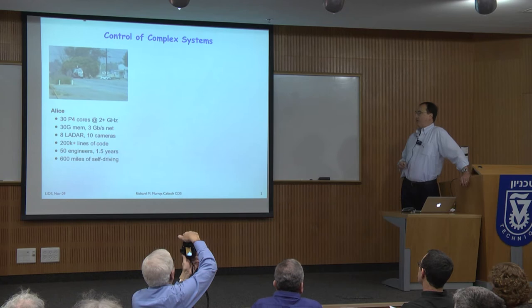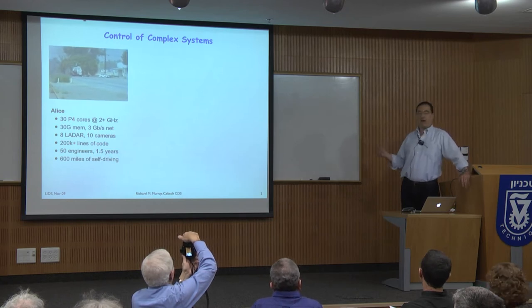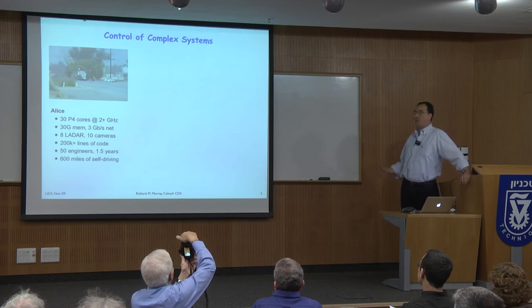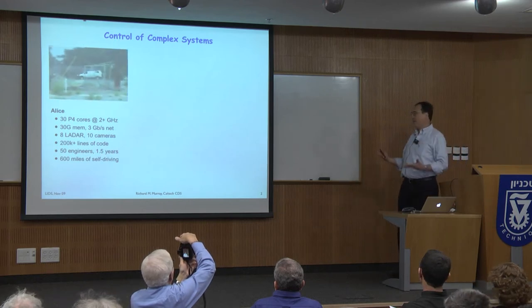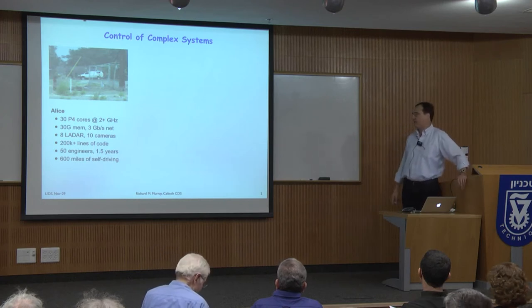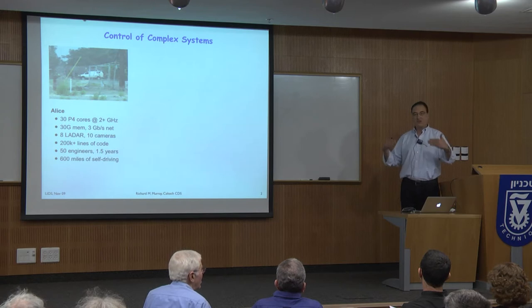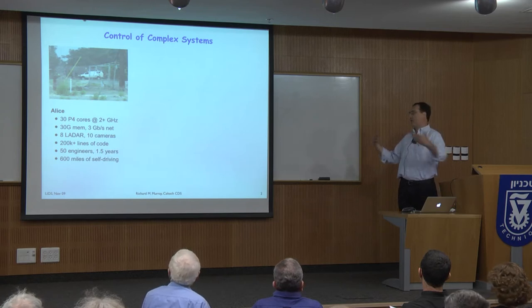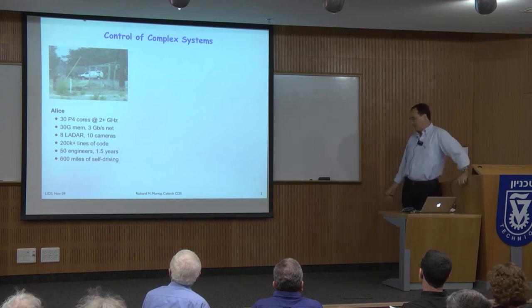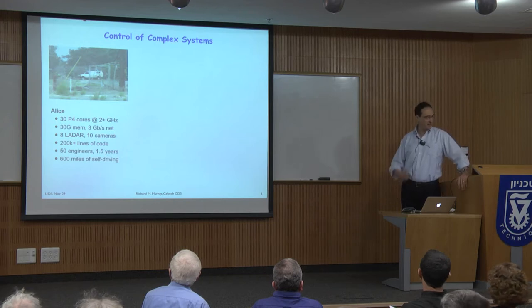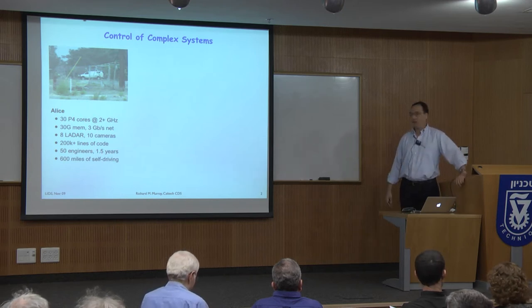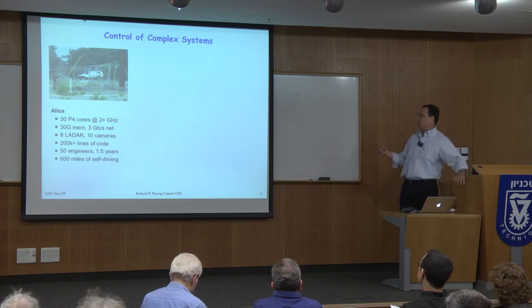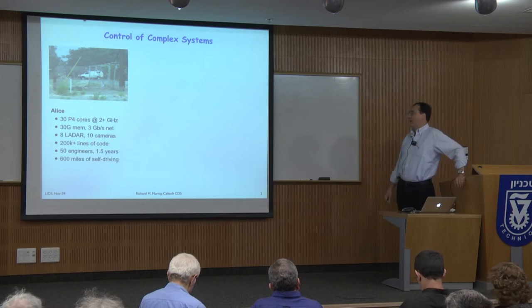From a control point of view, this type of engineering is something we're getting better and better at. This vehicle had about 30 Pentium 4 cores running at a couple of gigahertz, 30 gigabytes of memory, lots of communication between processors, many sensors — eight LADAR units, laser range finders, 10 cameras. We wrote about 200,000 lines of software on top of millions of lines of open source software, completed in about a year and a half with roughly 50 Caltech undergraduates and graduate students. We also built one for deserts — about 600 miles of self-driving demonstrated.